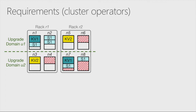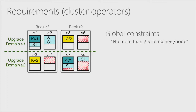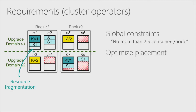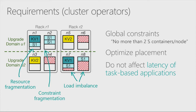From the cluster operator side: we want support for global constraints — for example, don't put more than two streaming containers on the same node due to interference. We also want to globally optimize placement, minimizing resource fragmentation, constraint fragmentation — where no new containers can be placed because constraints are saturated — and load imbalance, where some machines are fully loaded while others are not. At the same time, we do not want to affect the latency of existing task-based applications.